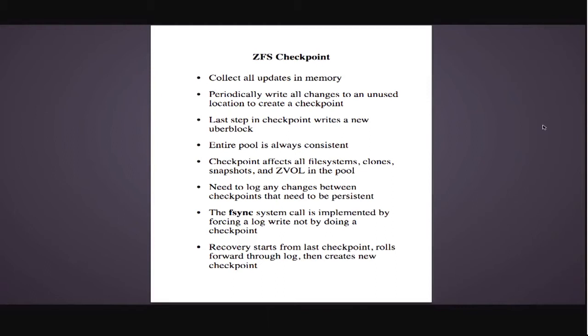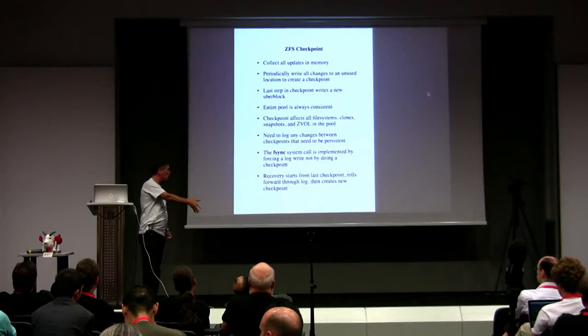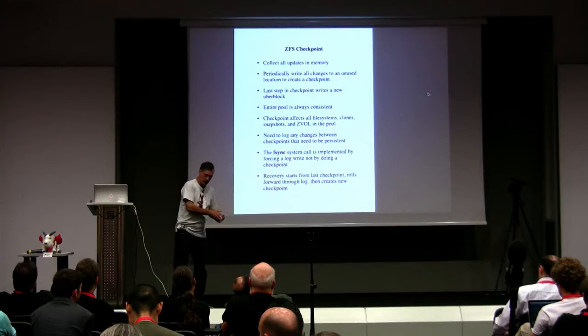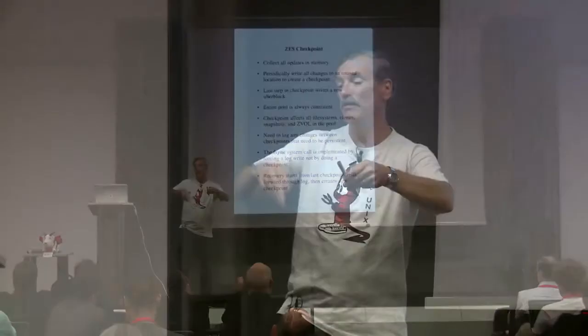The checkpoint affects all file systems, all clones — everything in the pool gets snapshotted at once. You need to log changes between checkpoints for persistence. Recovery starts from the last checkpoint: you find the uber block for the most recent checkpoint, find the intent logs — one for every file system and every zvol — and roll forward through the log. As you go through the log it builds up stuff in memory just like normal operation, and when complete you do a checkpoint to catch up, then reset the logs and move on.